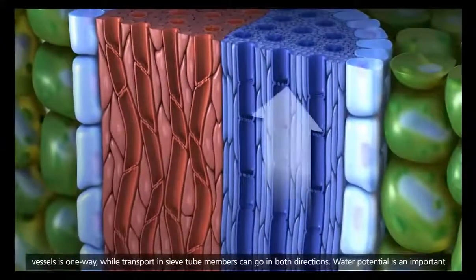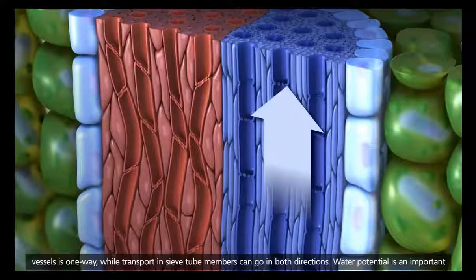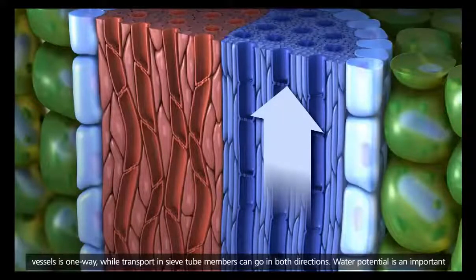Water movement in vessels is one way, while transport in sieve tube members can go in both directions.